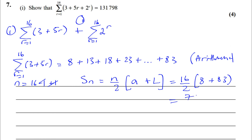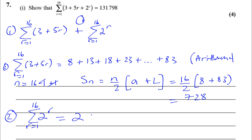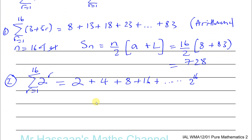Then we have the other sequence: sigma of 2 to the power of R from R equals 1 to 16. That's 2 to the power of 1, plus 2 squared, plus 2 cubed, plus 2 to the power of 4, all the way to 2 to the power of 16. We can see the common ratio is 2, so the first term is 2 and the common ratio is also 2 — it's a geometric sequence.